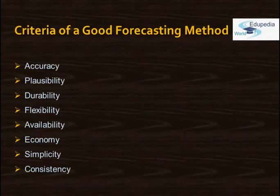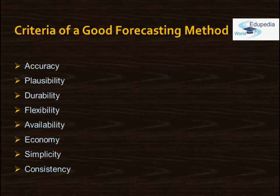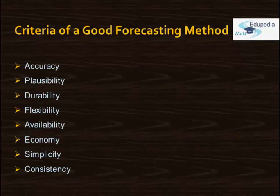Now let's look at the various criteria of a good forecasting method. There are a good many ways to make a guess about future sales, showing contrast in cost, flexibility, and adequate skills and sophistication. We will see the various types of forecasting — qualitative and quantitative methods — in upcoming sessions. Given the contrast in all these methods, there is a problem of choosing the best method for a particular demand situation. The economic criteria of broader applicability include: accuracy, plausibility, durability, flexibility, availability, economy, simplicity, and consistency.